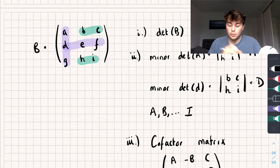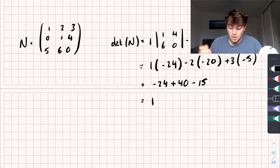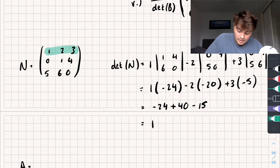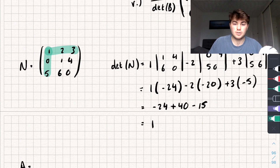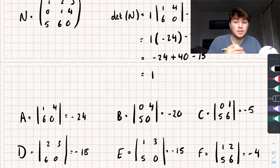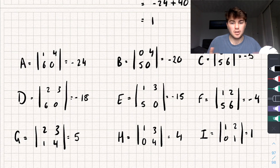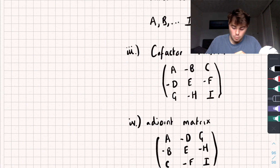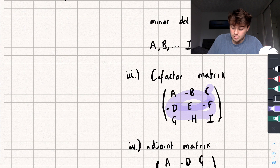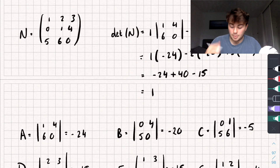Our second step is to find all of the minor determinants. So the minor determinant A — if we eliminate the first row and first column and take the determinant of what remains. I'm now going to quickly find all of the minor determinants and come back when I've got them all. I've found all of the minor determinants — you can check if you had a go. They're all here, and now we need to find the cofactor matrix by substituting in all the minor determinant values A, B, C, D and so on.